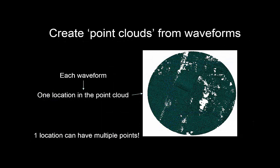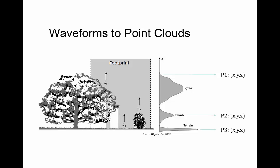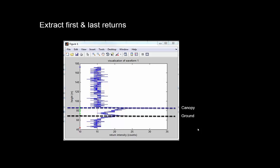We're going to create point clouds from the waveforms, where each waveform will be shown as a dot in the point cloud. This is essentially a map — a round area for which we have full waveform returns — and we can map things like ground and vegetation heights. One location can have multiple points. Going back to the full waveform, we're going to try and find the first return — the top of the canopy — possibly some intermediate points, and also the ground surface.